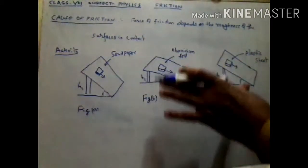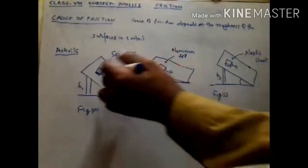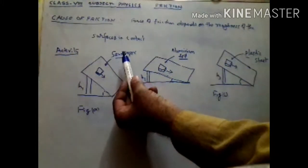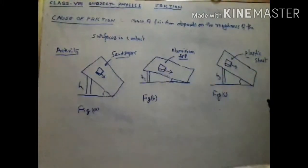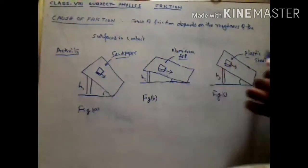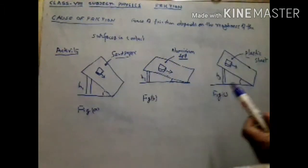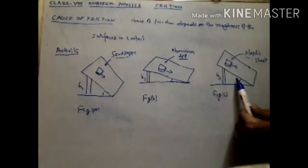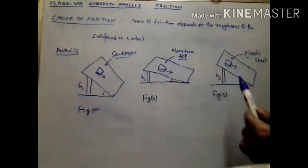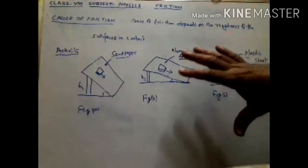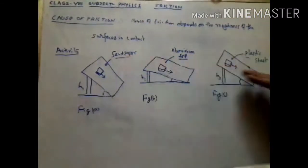This activity indicates that the force of friction depends on the nature of the surfaces in contact. Sandpaper is a rough surface, aluminium foil is a smooth surface, and the plastic sheet is less smooth than aluminium but more smooth than sandpaper. Therefore the angle of inclination is a little bit more than aluminium foil but less than sandpaper. This activity shows that the force of friction depends on the roughness of the surface.